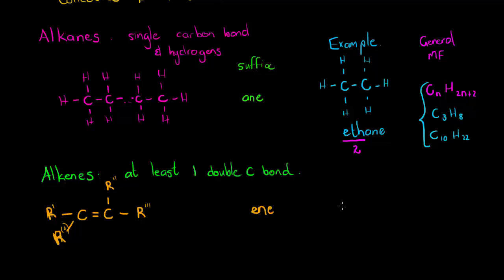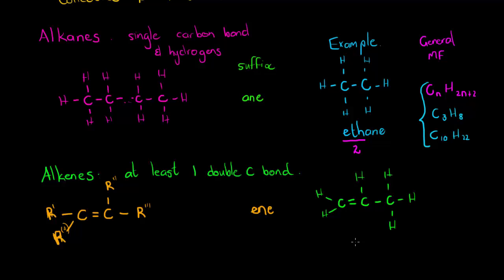For example, propene has three carbons with a double bond. The last carbon needs three more bonds — those go to hydrogen, hydrogen, hydrogen. The prefix "prop" is used whenever we have three carbons, "eth" is for two carbons, and "meth" is for one carbon.